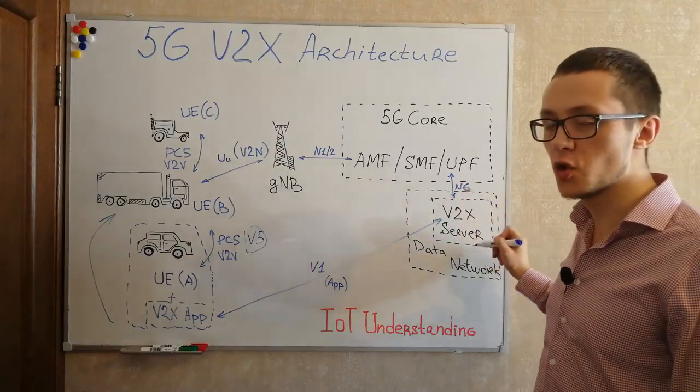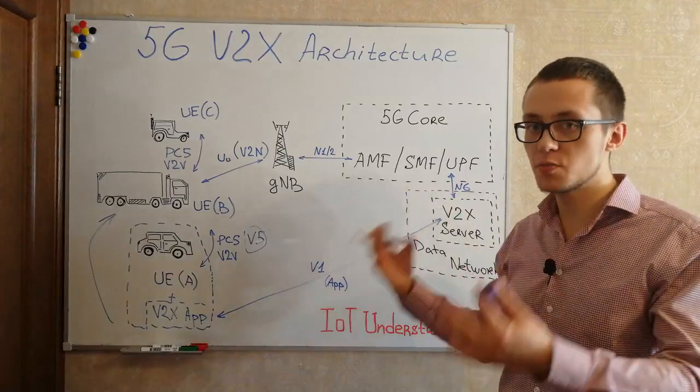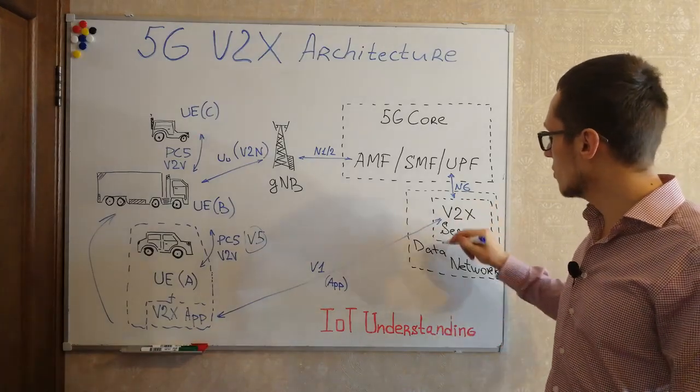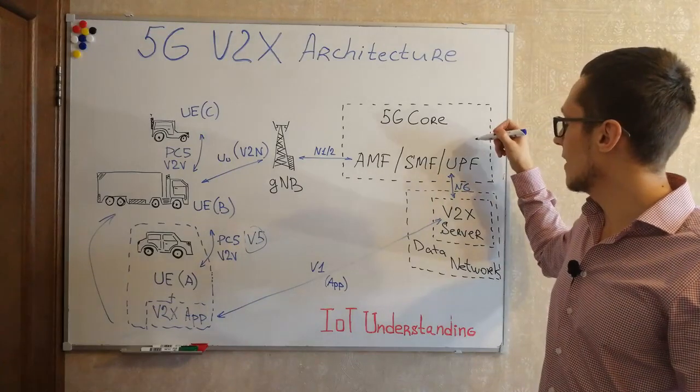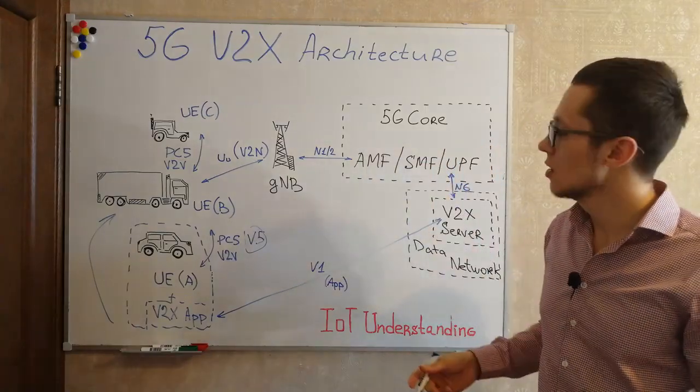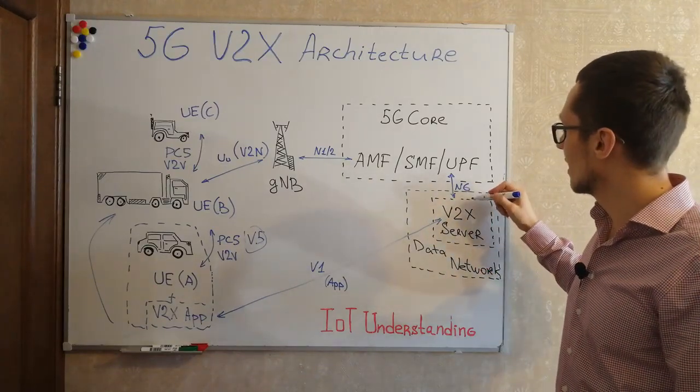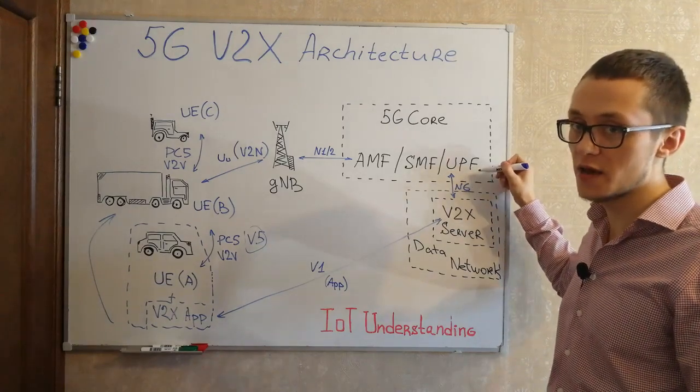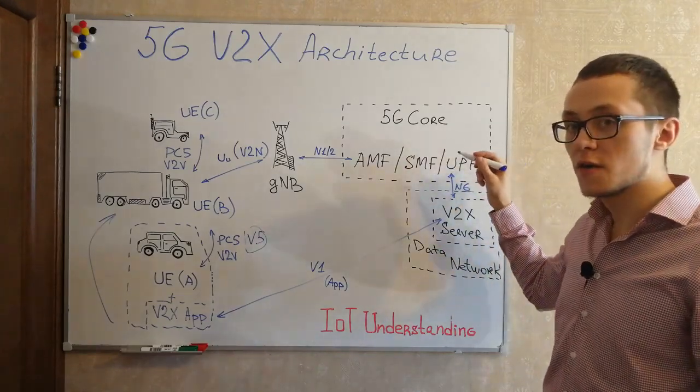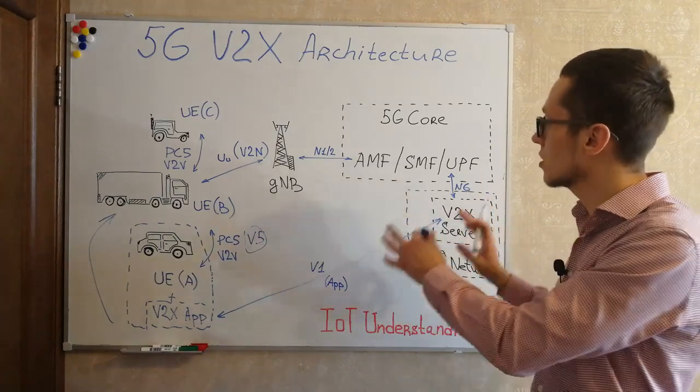In such scenario V2X server considered as a part of a kind of a data network with all of these processing, collecting information capabilities. Or V2X server may be inside 5G core network as a part of application function or V2X server may be dedicated like in this example but connected not via N6 interface with UPF, like here. But V2X server may connect to 5G core network via network exposure function again as a third part application server. So it totally depends on different scenarios.